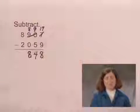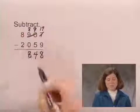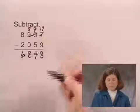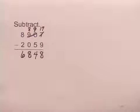And finally in the thousands column, 8 minus 2 is 6. So the difference is 6,848.